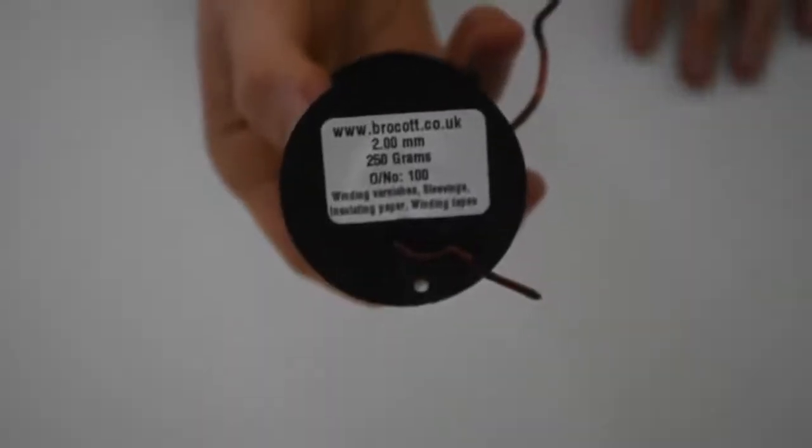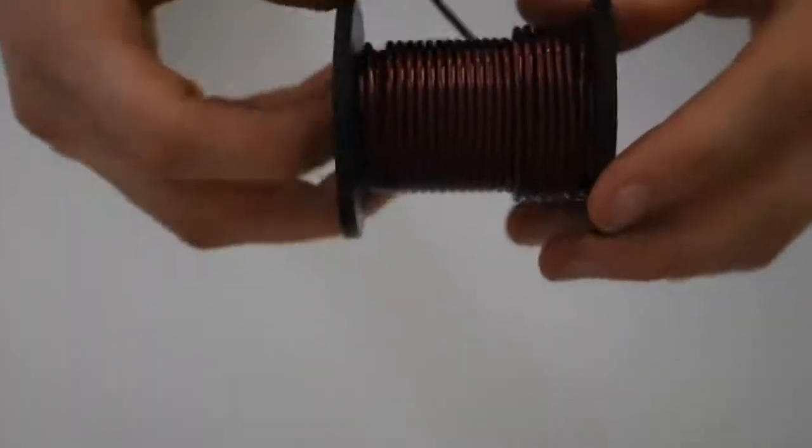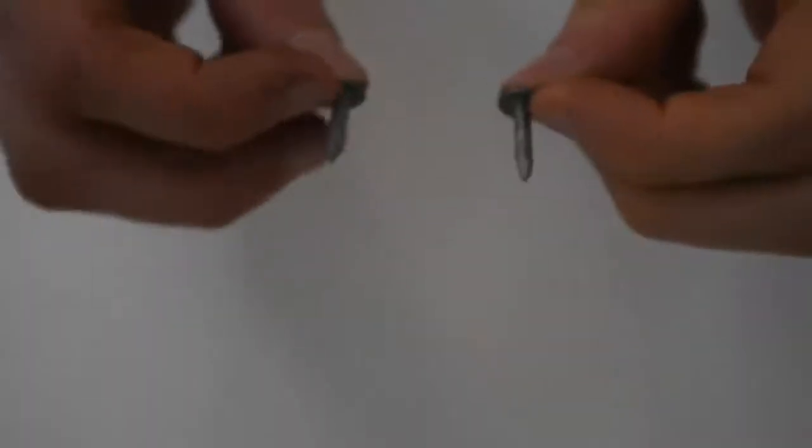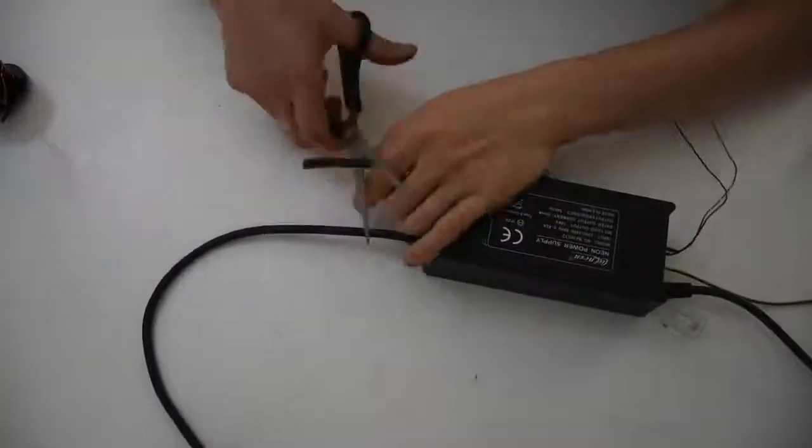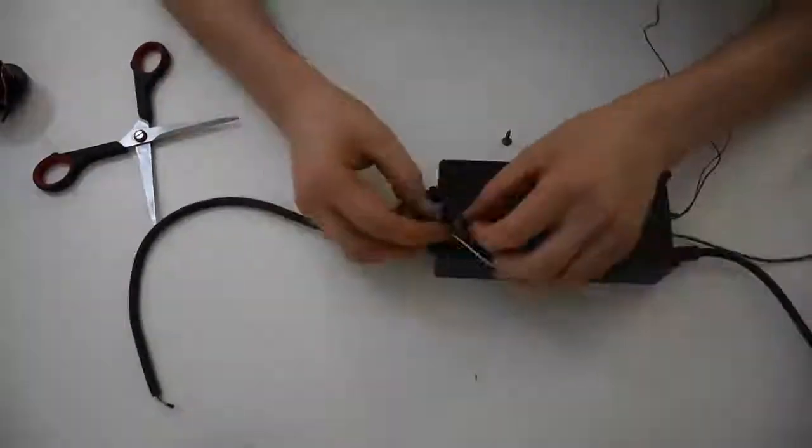For the coil we'll be using this 2mm thick enamel coated copper wire. And for the spark gap the prongs will be these two nails. So one high voltage wire will be connected to a nail and the other will be connected to the copper wire.